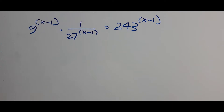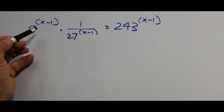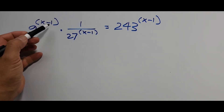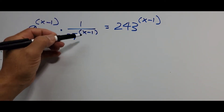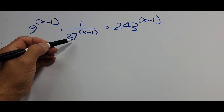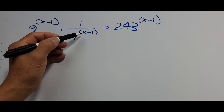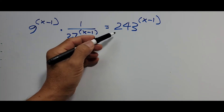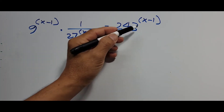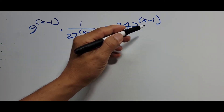So it's 9 raised to x minus 1, times the quantity 1 over 27 raised to x minus 1, equals 243 raised to x minus 1.